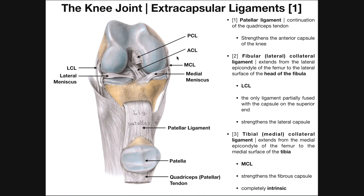Over on the medial side, here's our MCL. The MCL is also called the tibial collateral ligament or medial collateral ligament. This one extends from the medial epicondyle down to the medial surface of the tibia. What we see with the MCL is that it does come into contact with the medial meniscus — and that's very important in differentiating these two. The MCL physically connects with the medial meniscus, and the LCL does not.